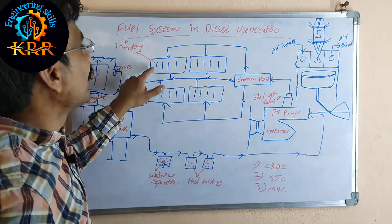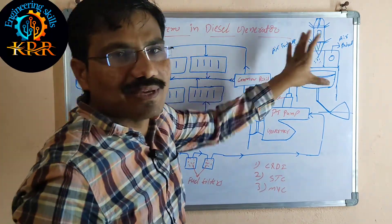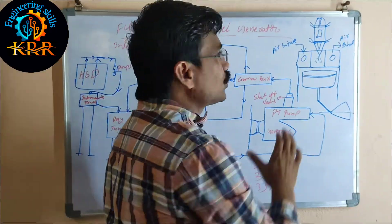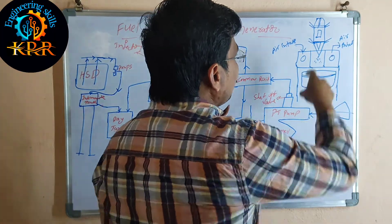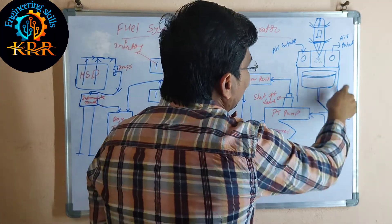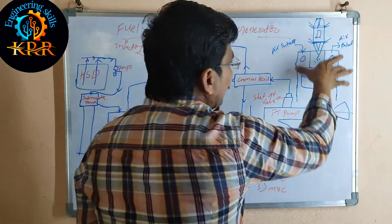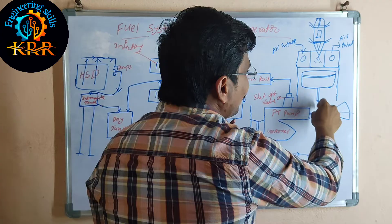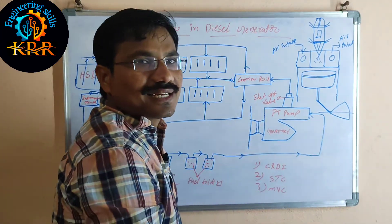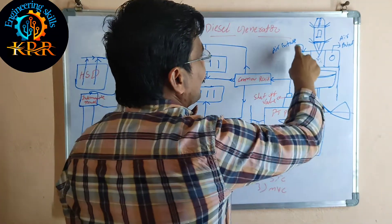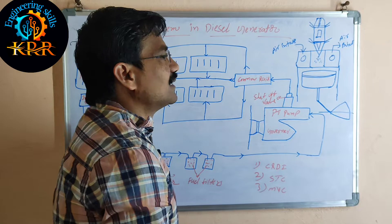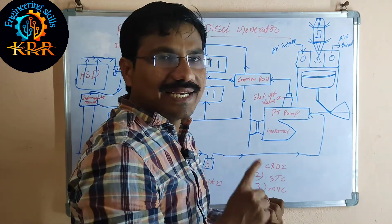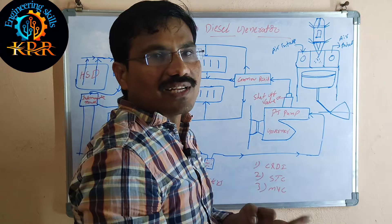Now I take one cylinder and one injector separately to explain. This is a four-stroke engine; the diesel generator uses a four-stroke engine. This is the cylinder, one line meaning one cylinder, one injector, one piston. This is the piston head, this is the piston rod, this is the camshaft - connected to the camshaft. This is the intake valve and this is the exhaust valve. The four strokes are: intake, compress, generate power, and exhaust.